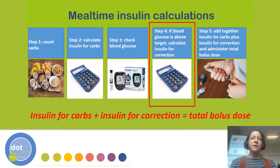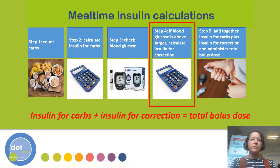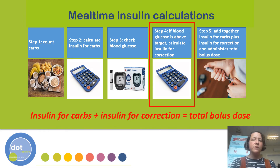The most important thing to remember when calculating a mealtime bolus is this: insulin for carbohydrate plus insulin for correction equals total bolus dose. We've gone over examples of how to decide upon a dose of insulin to cover the carbohydrate, and now we're going to move on to how to decide upon a correction dose if your child is above target prior to eating.